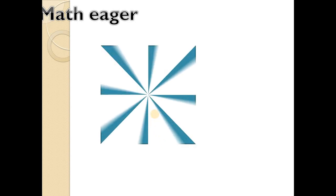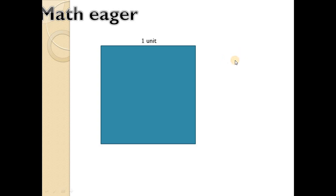Let's construct a square having its length as one unit and give the name of the square as A, B, C, D. Then construct a line AE such that this angle will be 70 degrees.